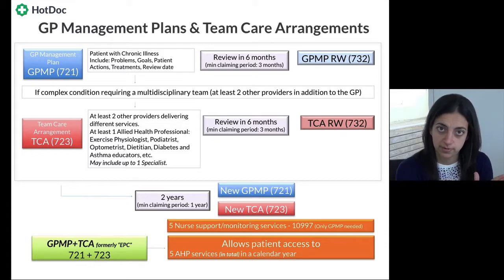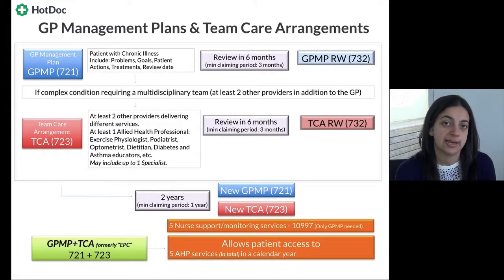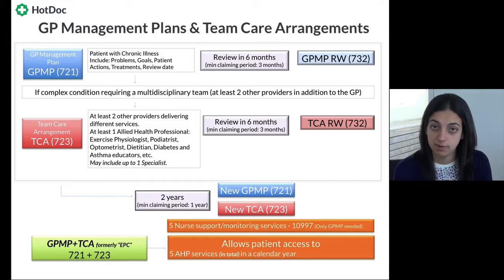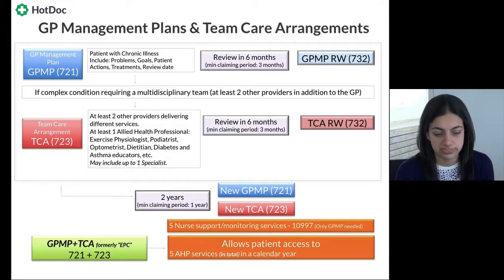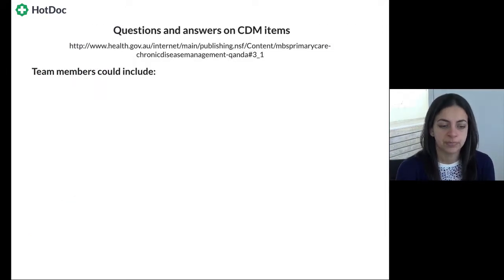These nurse consults can be up to five in any calendar year period — 1 January to 31 December. The GP doesn't have to see the patient on that day. Only a GP management plan is needed, so you can use this item 10997 for patients who only have the GPMP (item 721) even without the team care arrangement (item 723). It's a really helpful item to be mindful of.